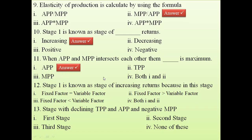Question 12: Stage one is known as the stage of increasing returns because fixed factor is greater than the variable factor. With more fixed factor and as you keep adding variable factors, you get more and more returns. Since the input is less, the more you add, the more return you get.